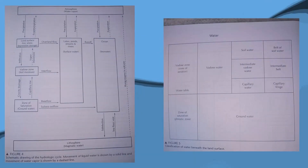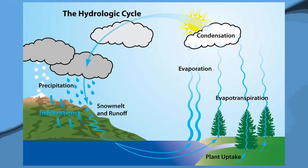These are a couple of charts from the Fetter book — figures four and five — basically block diagrams showing the hydrologic cycle and how water flows. In the vadose zone you have vadose water, soil water, intermediate vadose water, and capillary water, which grades into the zone of saturation — the phreatic zone — at 100% saturation. There's also a good flow chart visual of the hydrologic cycle that makes it easy to understand.